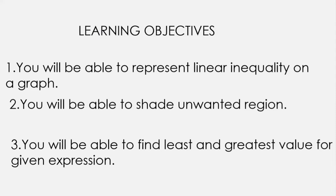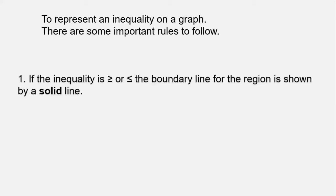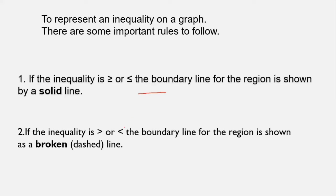When you represent an inequality on a graph, there are some rules. If the inequality is greater than or equal to, or less than or equal to, the boundary line is shown by a solid line. If the inequality is strictly greater than or less than, the boundary line is shown with a broken or dashed line.